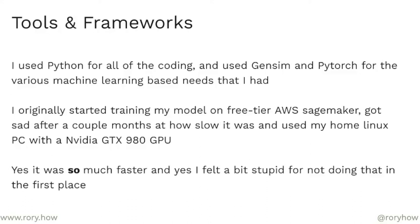I was originally going to use SageMaker — I thought it would be super cool and I'd feel like an elite hacker. But I was a student at the time and didn't want to spend money to train my models. It took really long — hours each time — and that got me sad. After a couple of months of being sad and trying to persevere, I thought: what if I just try this on my home PC, which has an Nvidia GTX 980? And it was so much faster. I felt really, really stupid, because I'd spent a lot of time trying to get everything working on SageMaker when I could have just run it on my home computer.